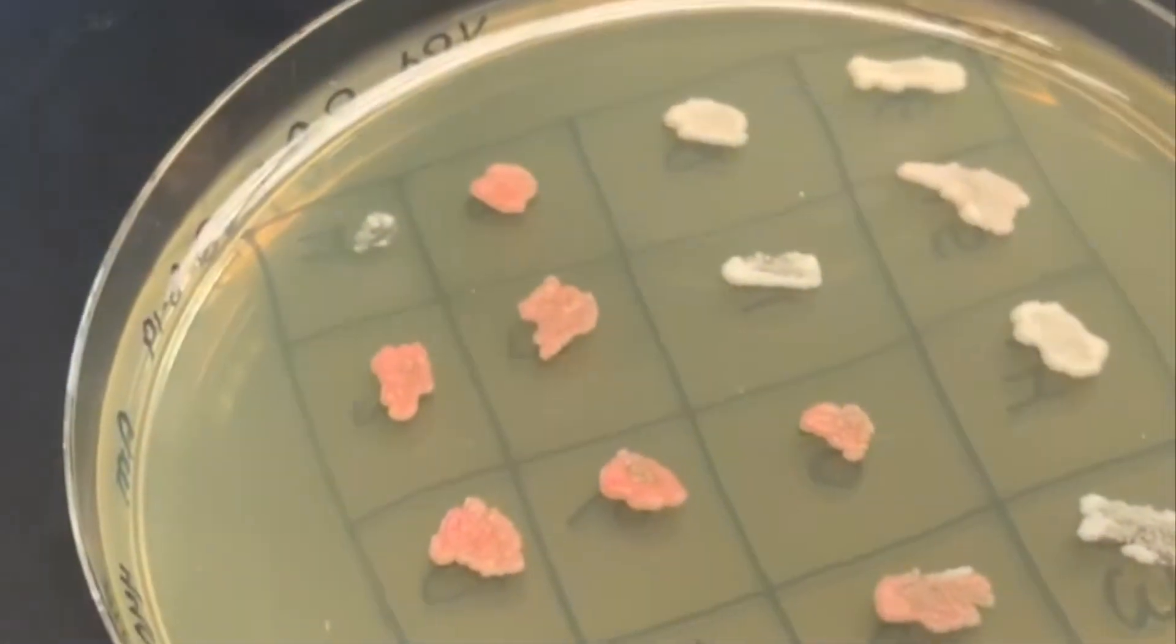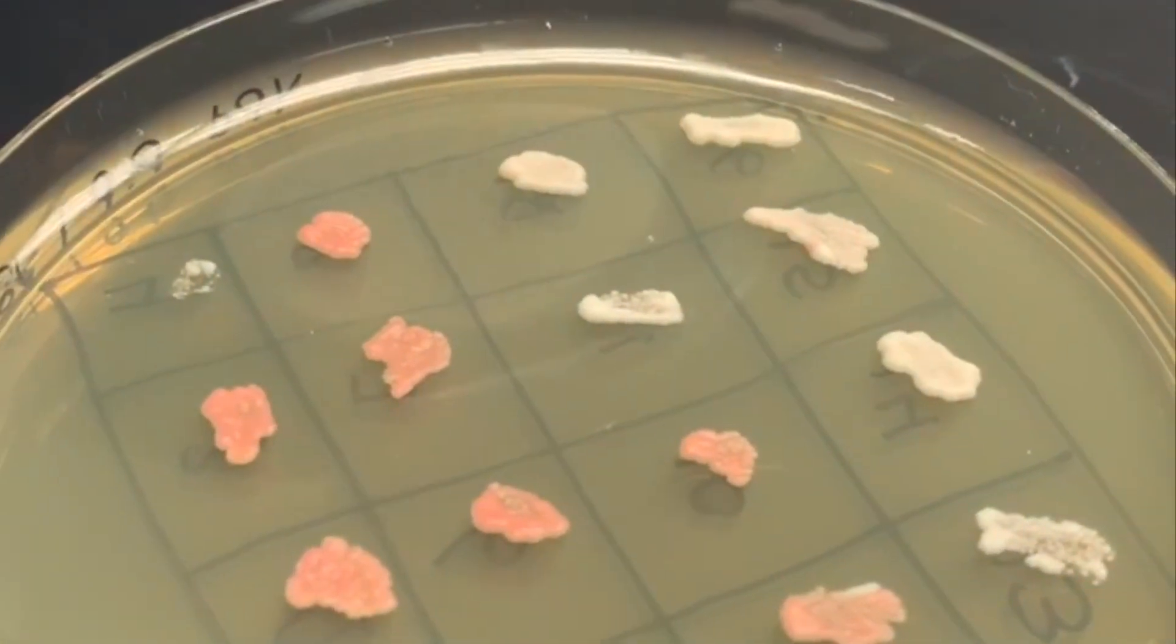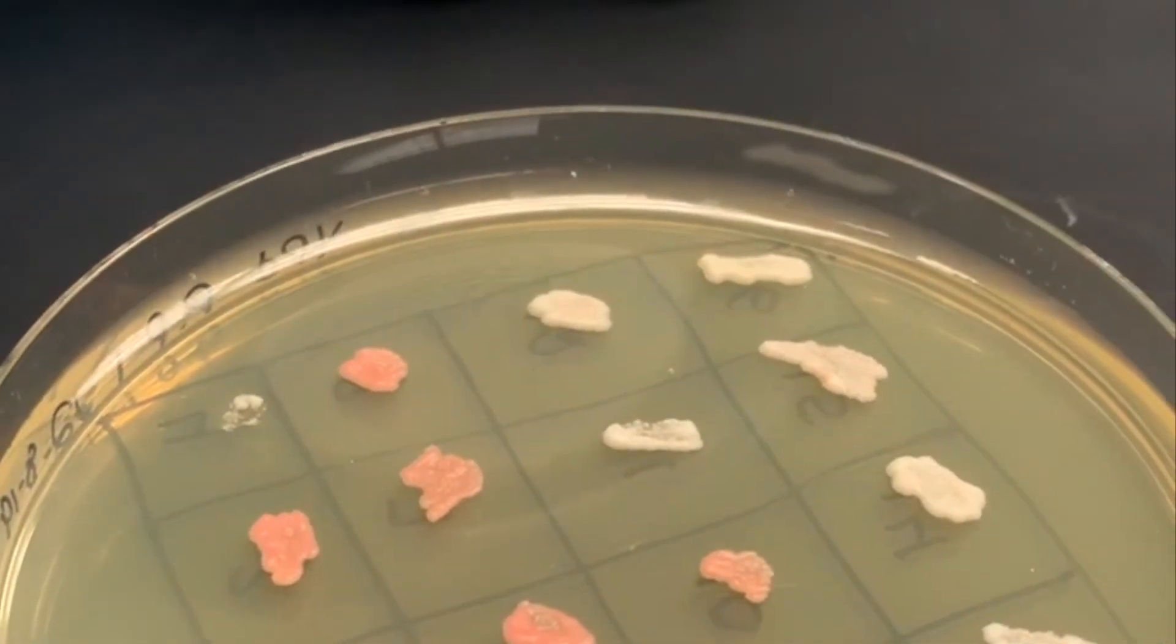To extract this plasmid for further use, a technique called smash and grab is used to isolate all genetic material present in the yeast, including our plasmid product.